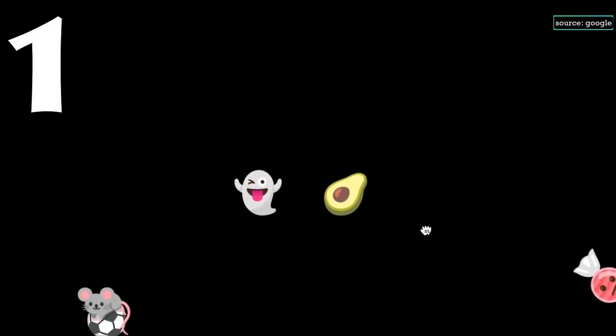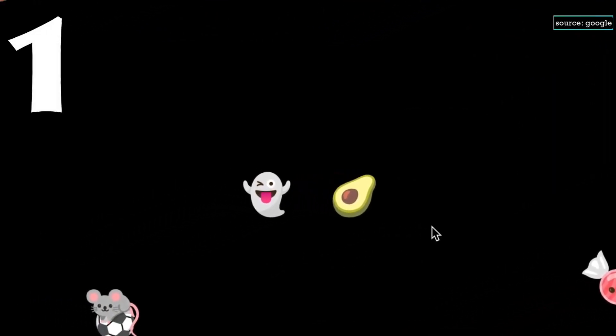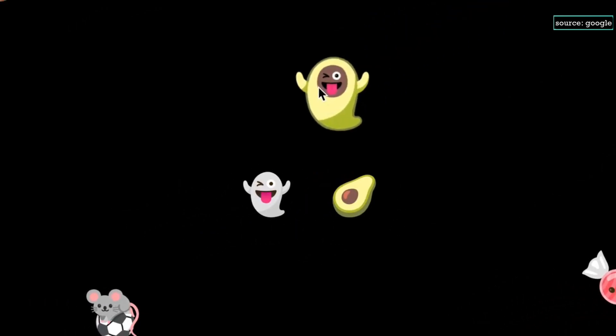Emoji Kitchen lets you combine different emoji to make new ones. For example, if you combine this ghost with this avocado, you get this.